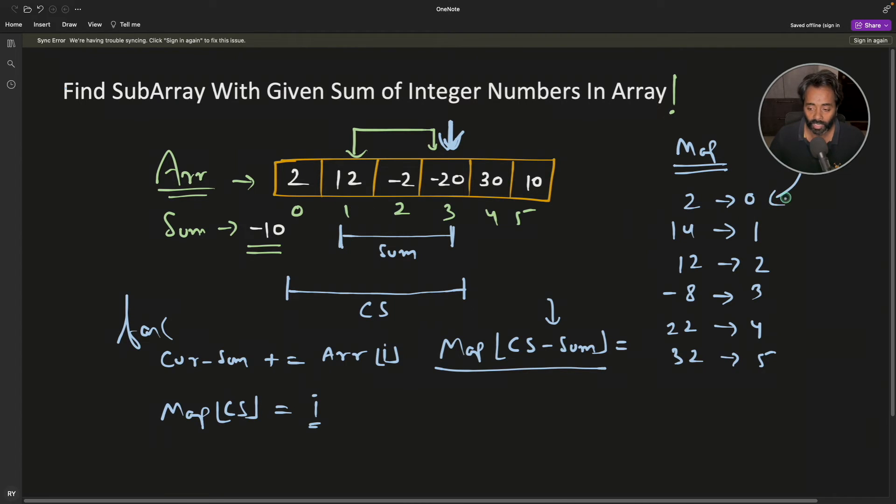It's like I'm starting from beginning and keep adding all these numbers and keep checking if current_sum - sum exists in my map, and I'll update map like this.